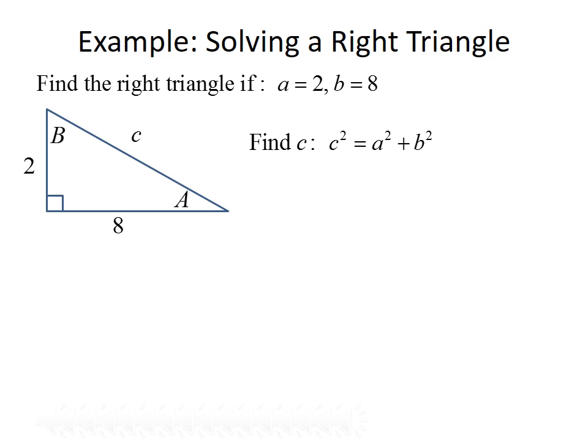C squared equals a squared plus B squared. Plugging in our values, we get C squared equals 2 squared plus 8 squared, so C squared equals 4 plus 64, which is 68. Taking the square root of both sides, C equals the square root of 68, which is approximately 8.25. Note that if your problem asks for an exact answer, leave it in square root form; otherwise, use a calculator for the approximation.